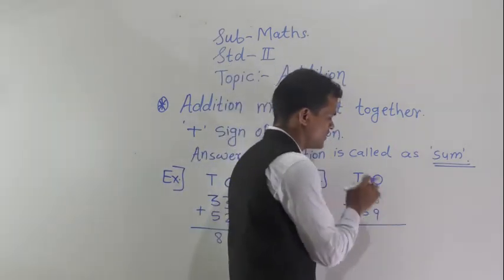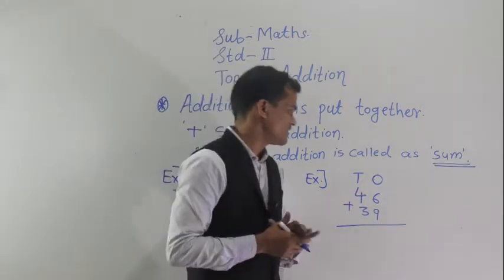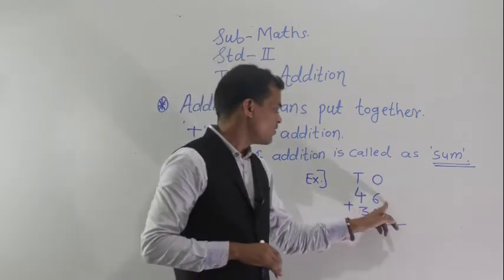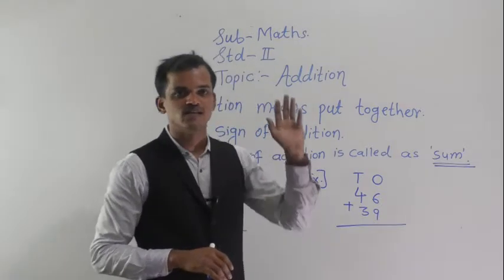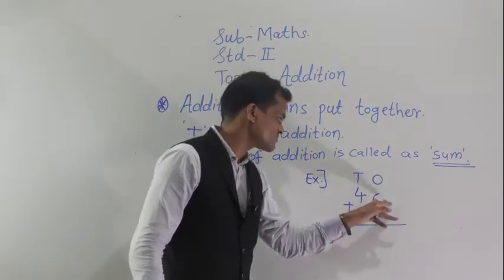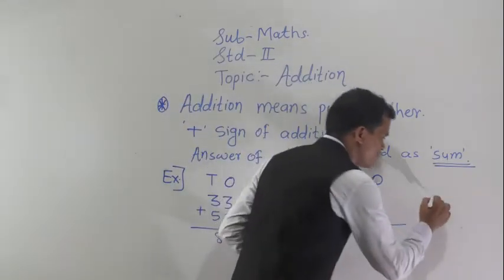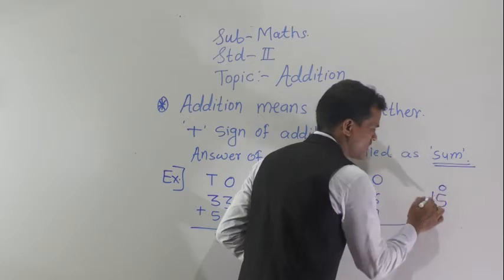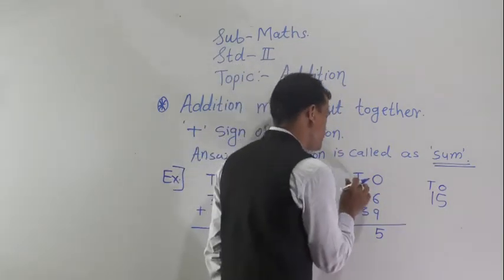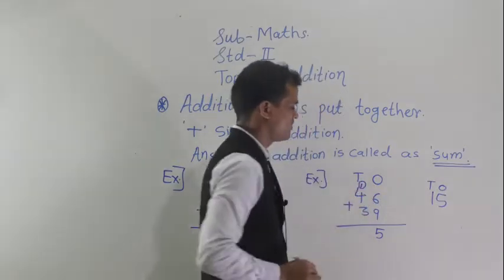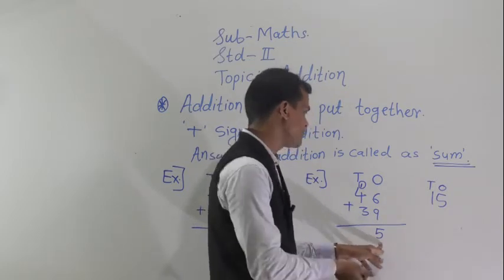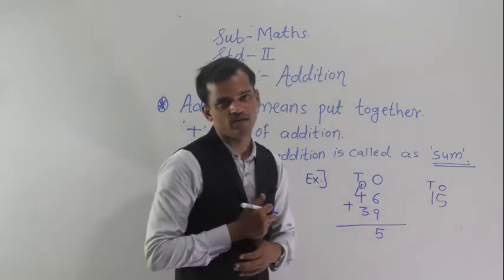Next example: 6 plus 9. You have to start from the ones place. Count 9 fingers after 6 — 7, 8, 9, 10, 11, 12, 13, 14, 15. So 6 plus 9 equals 15. We write 15 as 5 ones and 1 ten. Write 5 at the ones column and carry 1 to the tens place.